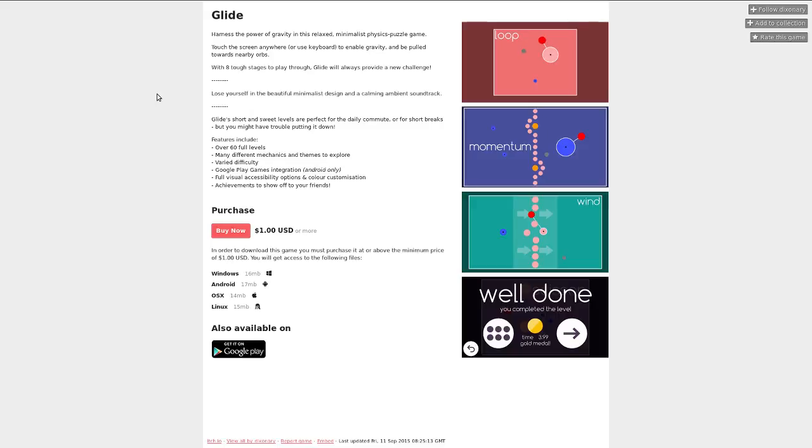Loan Cain here and this is Glide. Harness the power of gravity in this relaxed minimalist physics puzzle game. Touch the screen anywhere or use the keyboard to enable gravity and be pulled towards nearby orbs.